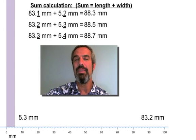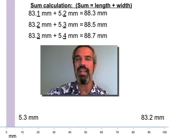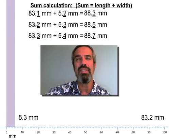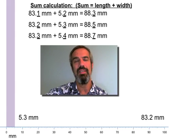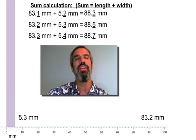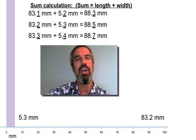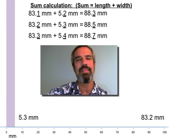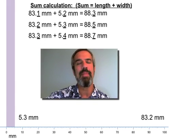Look what we get. We get 88.3, 88.5, 88.7. Those numbers are already consistent the way they are. You don't have to do anything. You don't have to round them. They are good, just as they are. That wasn't the case with multiplying and dividing. We had to round to get down to agreement, where it was only different in that last place. Here, it came that way automatically.